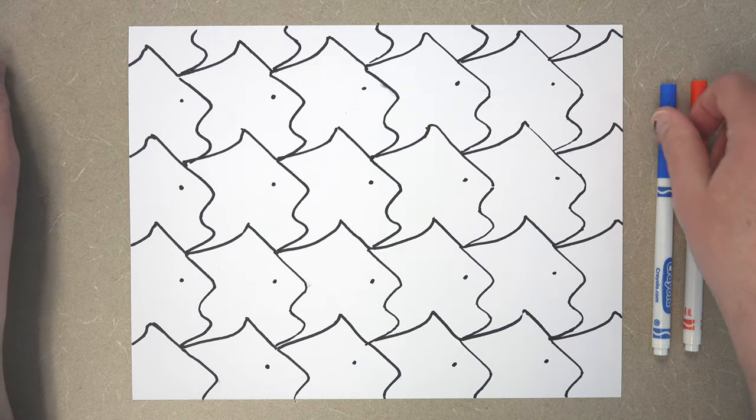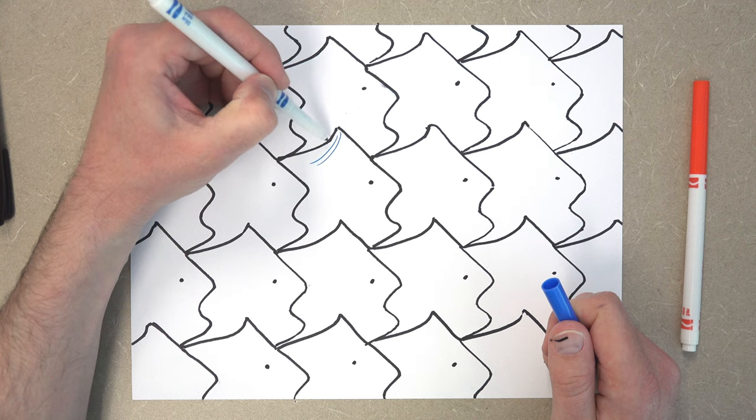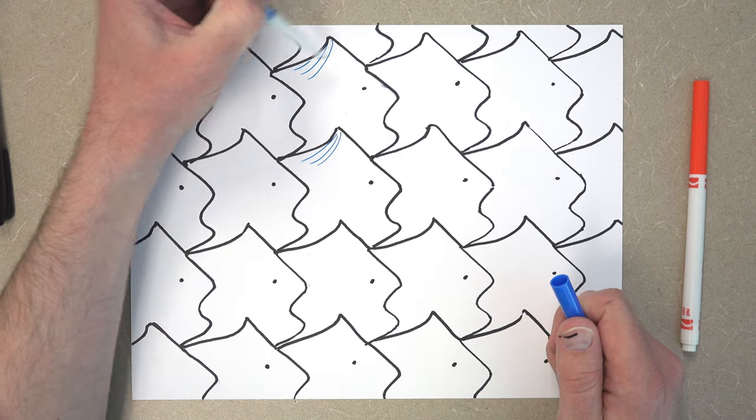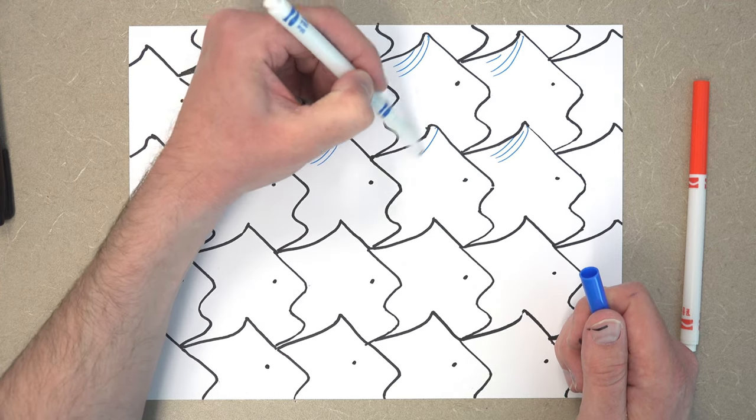And then you can use a little bit of color. You can do highlights. I like to use markers because they're big and bold, but you can use paint, crayons, anything you like really.